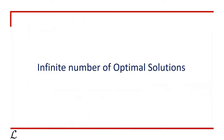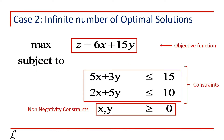Now we will learn about the infinite number of optimal solutions. Is it possible? And if yes, how? Let's understand this by a small example. The objective function is to maximize z, which equals 6x plus 15y, subject to two constraints. The first constraint is 5x plus 3y less than or equals to 15, and the second constraint is 2x plus 5y less than or equals to 10. Both variables should be positive, so x and y are greater than or equals to 0, which is also called the non-negativity constraint.